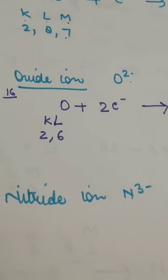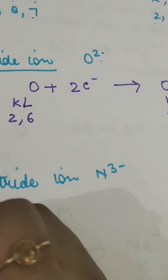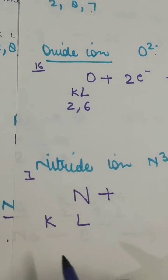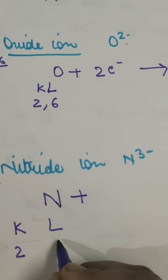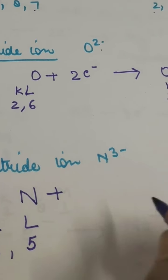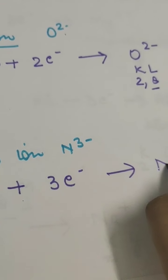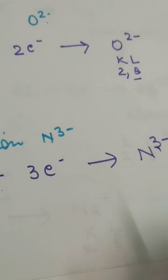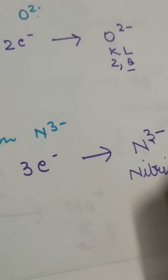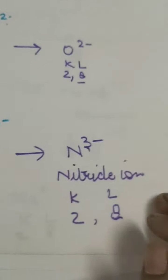In the case of nitride ion - when nitrogen becomes an ion, we don't call it nitrogen ion but nitride ion. Nitrogen has atomic number 7, so its electronic configuration is K and L: 2 in K shell and 5 in L shell. It wants to have 8 electrons, so it will gain 3 electrons and become the nitride ion (N³⁻). The configuration now will be K and L: 2 and 8.